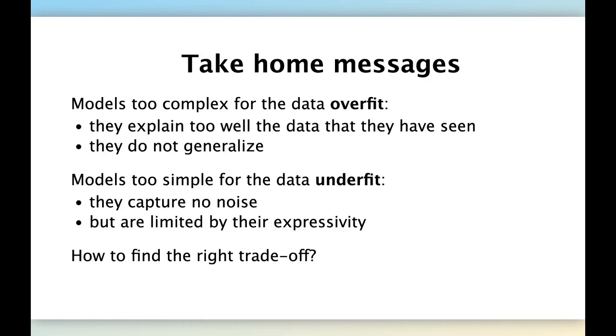So there is a trade-off here. Typically, underfitting happens when you have plenty of data and a low noise level and you chose a model that is too constrained for this complex dataset. We see that we have a trade-off between overfitting and underfitting. Remember that overfitting happens when the models are too complex and they explain too well the data that they have seen as part of the training set including the noise and therefore they do not generalize well. Models that are too simple for a given dataset underfit because they are too limited by the expressivity of their model class. So how to find the right balance? This is the main question of machine learning and we will see elements of answers in the next presentation. Thank you.